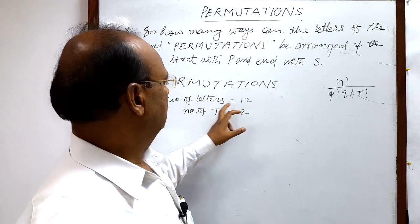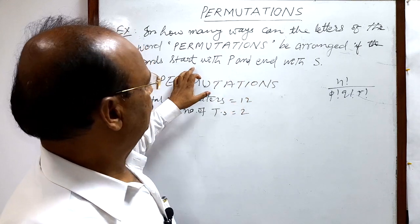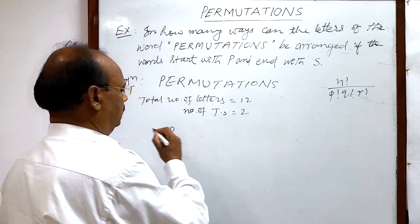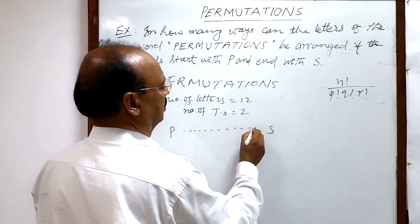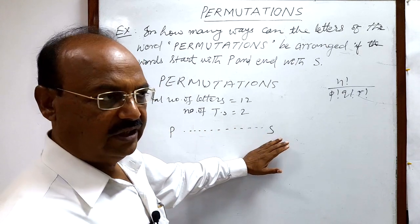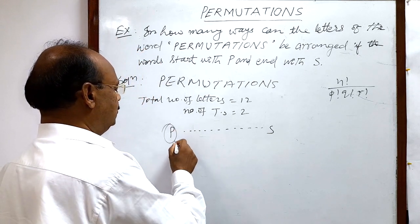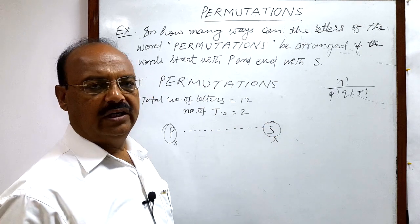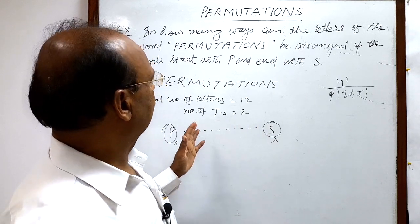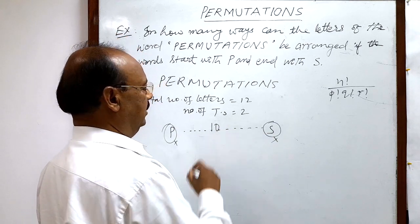Here the total number of letters is 12. But the condition is that words should start with P and end with S. So the places of these two letters are fixed. Other than these two letters, the remaining letters are: out of 12, two letters are fixed, so remaining letters are 10.